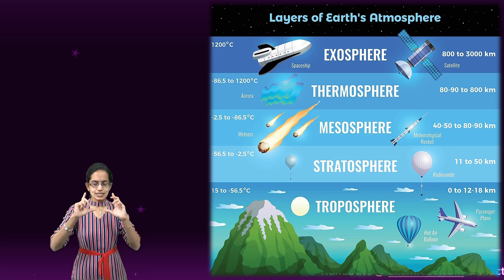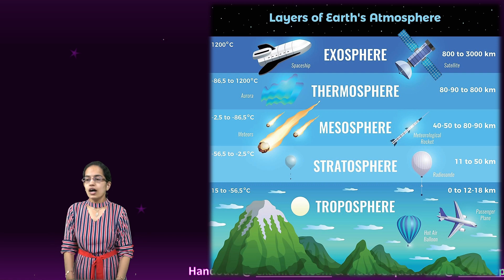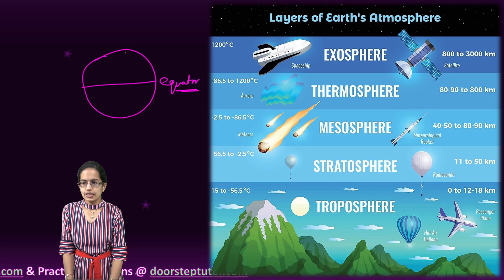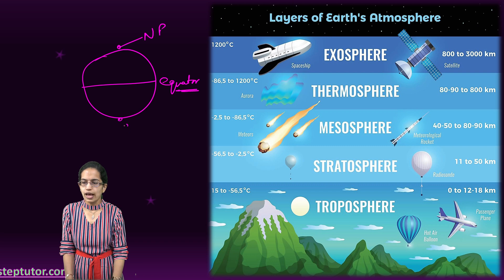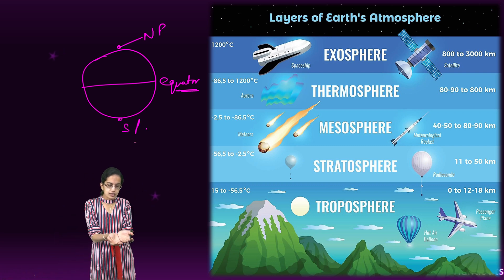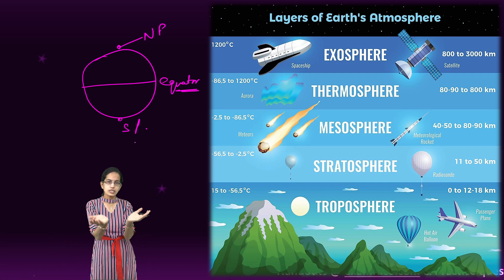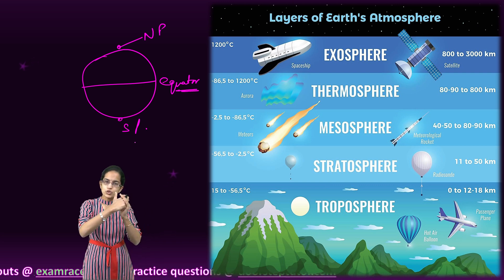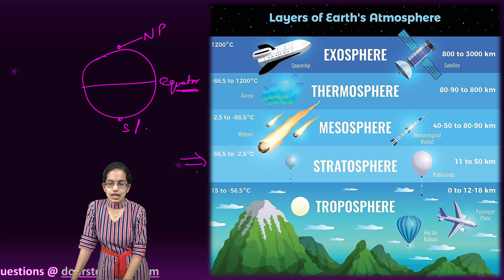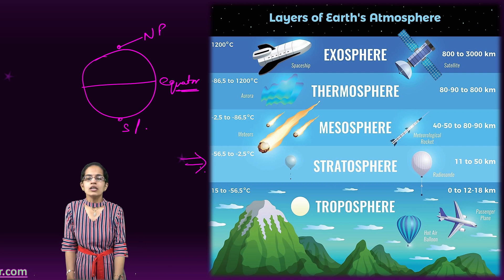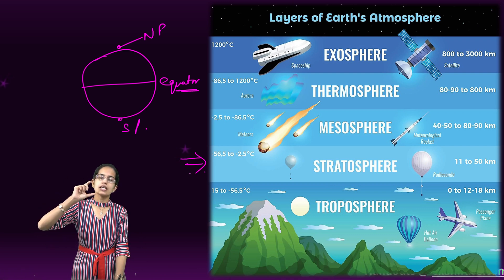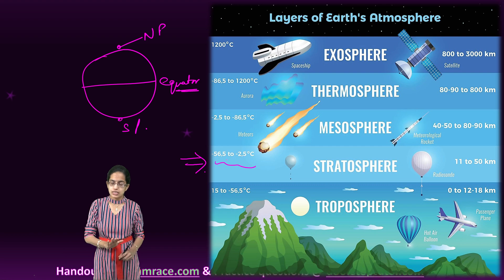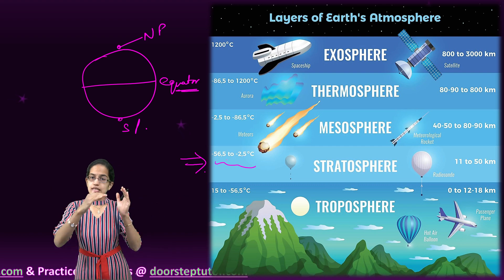Before we understand this concept, let's understand two basic things. Within the Earth, we have various layers. The middle section is the equator and towards the north and south, we have the north pole and the south pole. If we talk about the atmosphere of the Earth, the layers of the atmosphere — the closest layer to the Earth is the troposphere, and the next layer is the stratosphere. The stratosphere is the layer we are going to focus on today. It extends from 10 to 50 km, is the layer where ozone is present, and has a usual temperature of minus 56 degrees to minus 2 degrees Celsius — a relatively cold layer seen in the upper atmosphere.